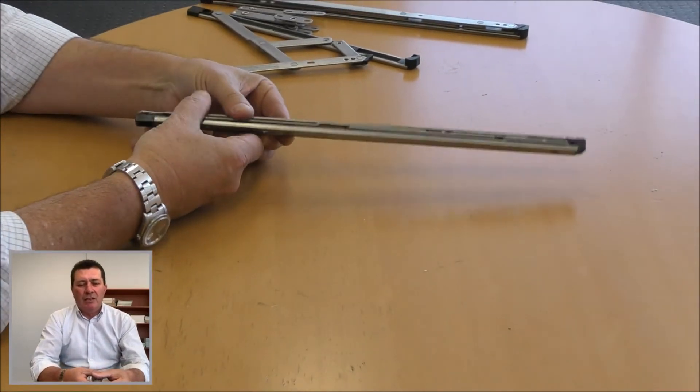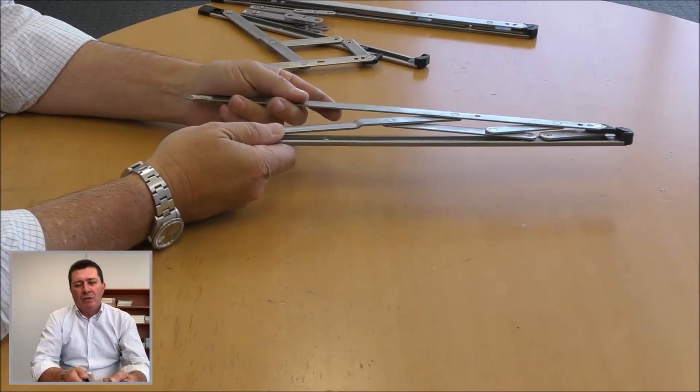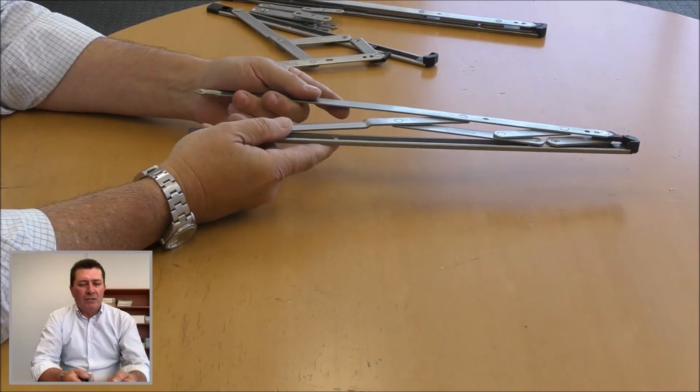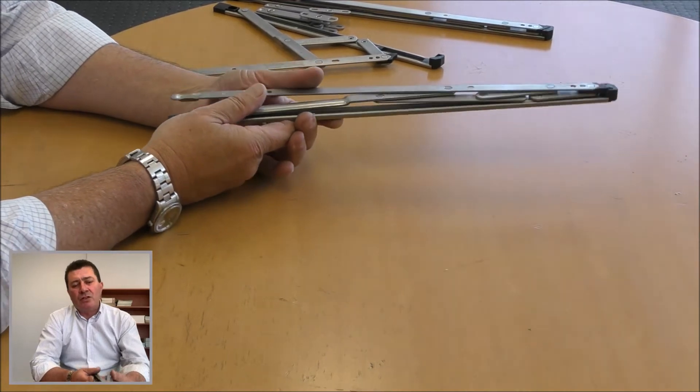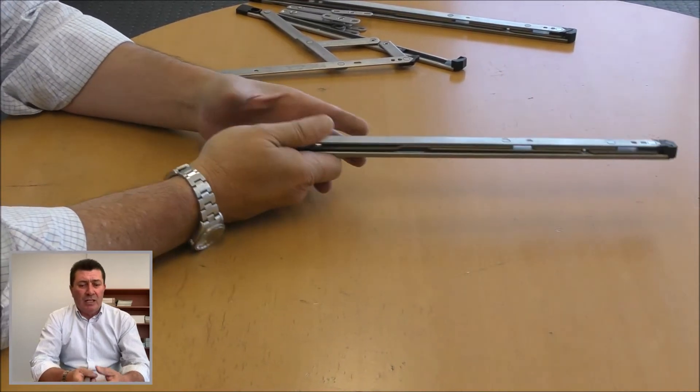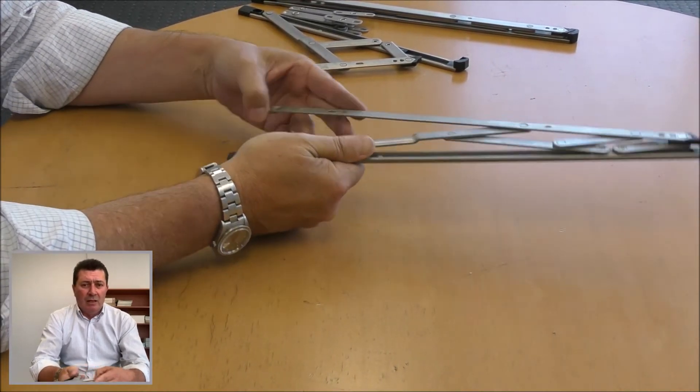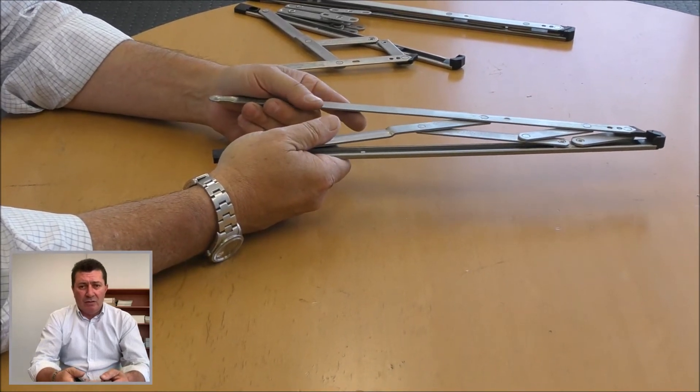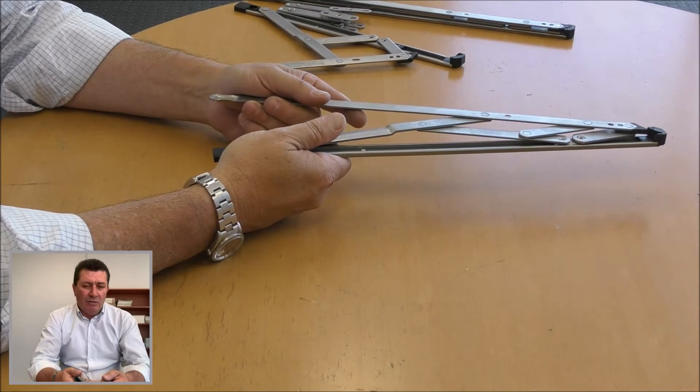We offer this in a 13 to 15 mil cavity or rebate, 12 and 16 inch stays, and we have a heavy-duty version for a 16 to 18 mil cavity. They're available ex-stock, all 304 stainless, cycle tested, and meet all Australian requirements.